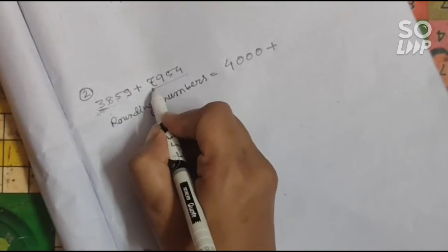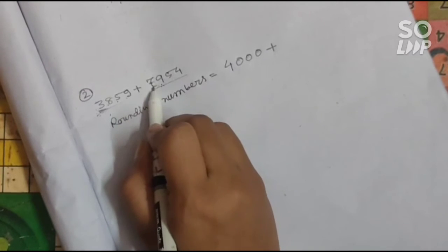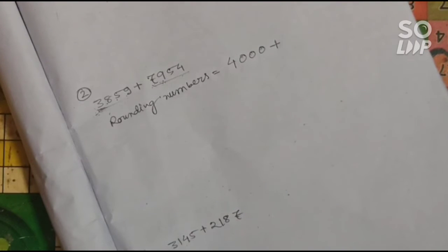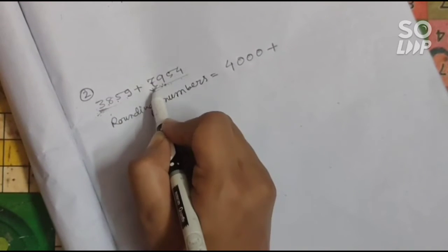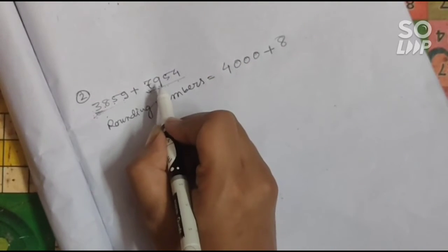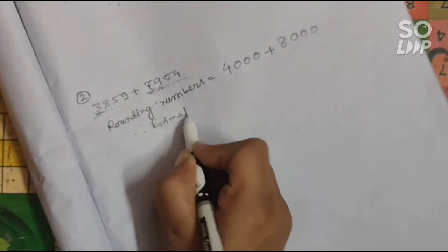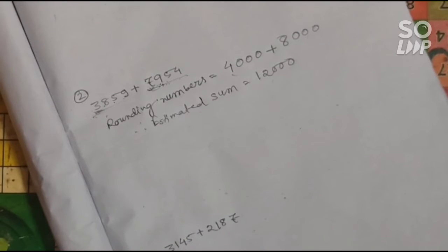For the second number, the thousand digit is 7. After 7 comes 9, which is greater than 5. So we need to add 1 to 7 — remember, when the next digit is greater than or equal to 5, add 1 to the given digit; if less than 5, do not add 1. So 7 becomes 8, and we place 3 zeros: 8000. The estimated sum is 4000 plus 8000, which equals 12,000. That is how you find the estimated sum.